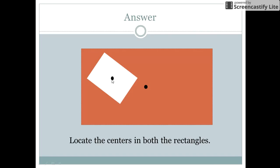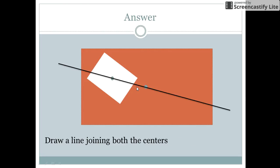When we have located the center of both the rectangles, we make a line passing through the centers of both these rectangles.